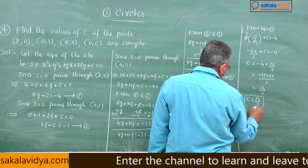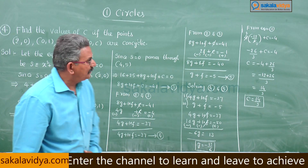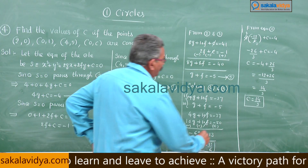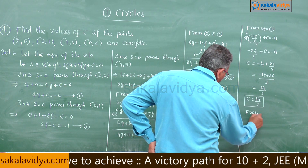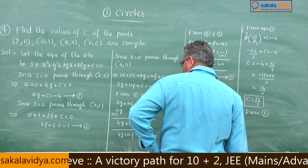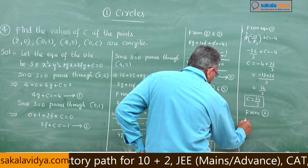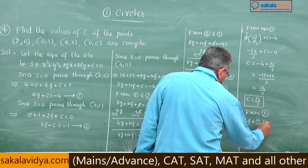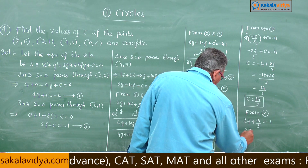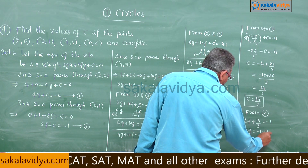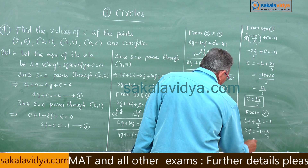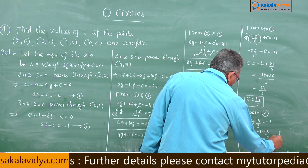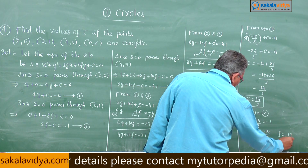Now we need to find the f value. From equation 2: 2f + 14/3 = −1, so 2f = −1 − 14/3 = −17/3, therefore f = −17/6.